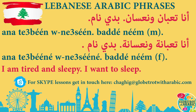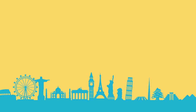Let's repeat both sentences. Masculine: Ana ta'abane wa na'asane, Bde name. Feminine: Ana ta'abayne wa na'asane, Bde name. That's feminine — the 'a' ending marks the feminine form.